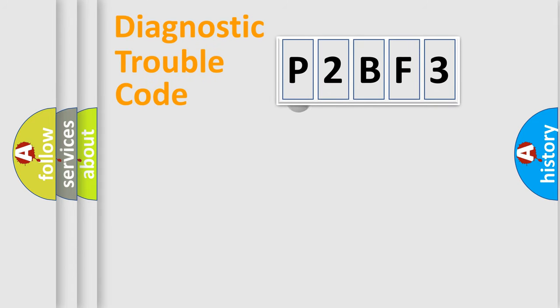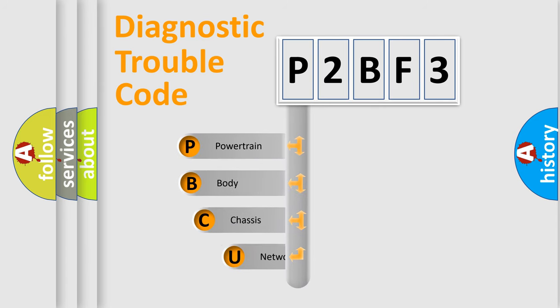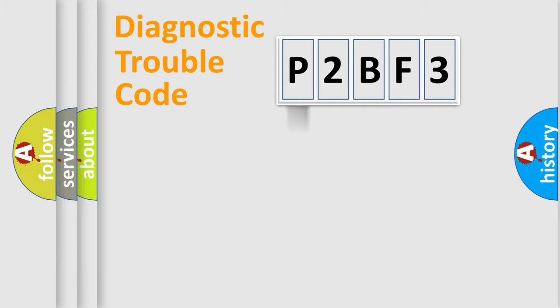First, let's look at the history of diagnostic fault code composition according to the OBD2 protocol, which is unified for all automakers since 2000. We divide the electric system of automobile into four basic units: Powertrain, Body, Chassis, and Network.